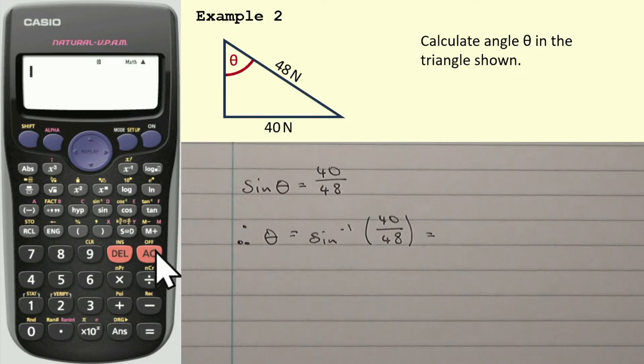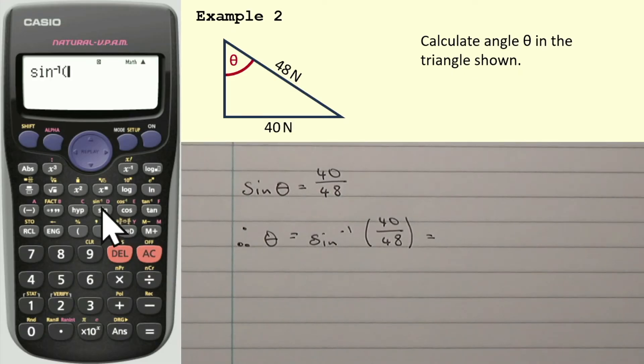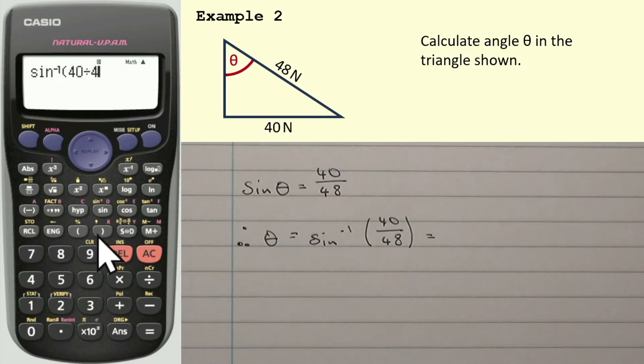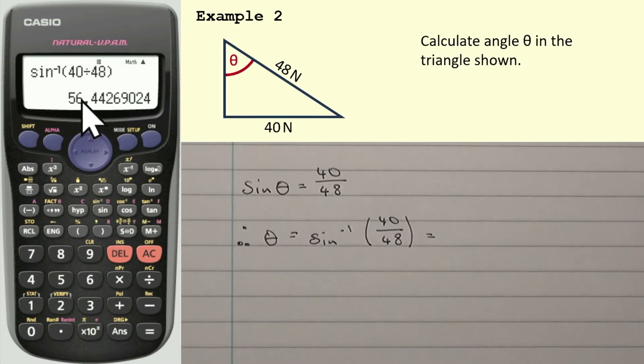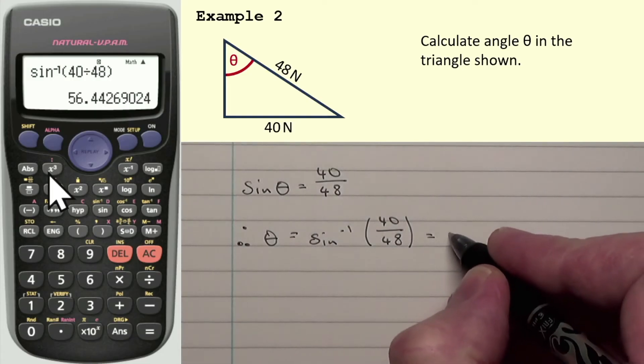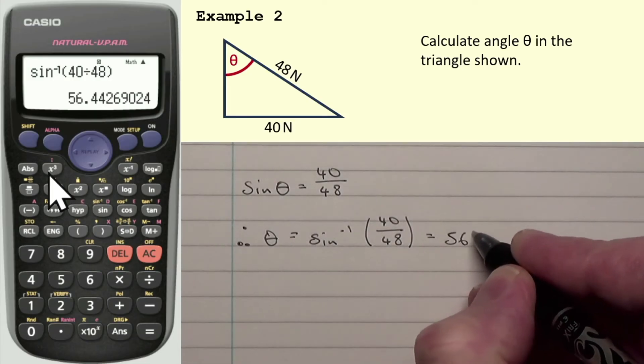And again, we'll use the calculator. Press shift, then the sine button gives us sine to the minus 1, 40 divided by 48, close the bracket, and that gives us this. Now again, I'm going to write that to two significant figures. The number after the 6 there is less than 5. If this was a 5 or greater, I would round this up to 57. It's not, though. So I'm just going to write 56 degrees.